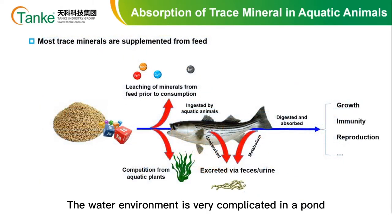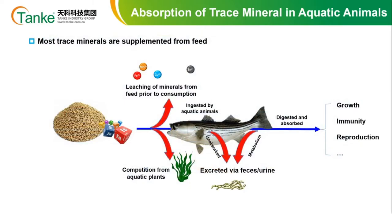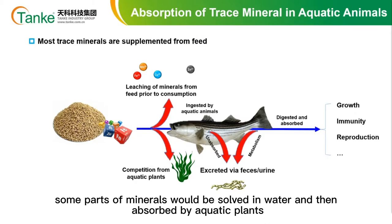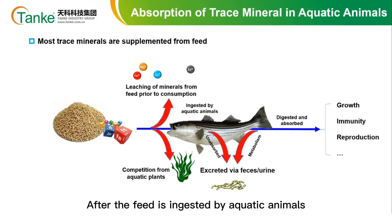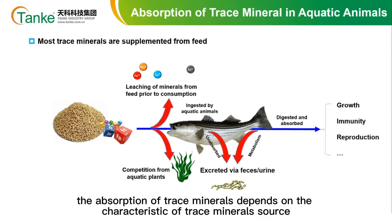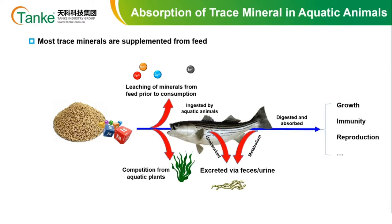The water environment is very complicated in a pond. When feed is spread to water, some portions of minerals would dissolve in water and then be absorbed by aquatic plants. After the feed is ingested by aquatic animals, the absorption of trace minerals depends on the characteristics of the trace mineral source.